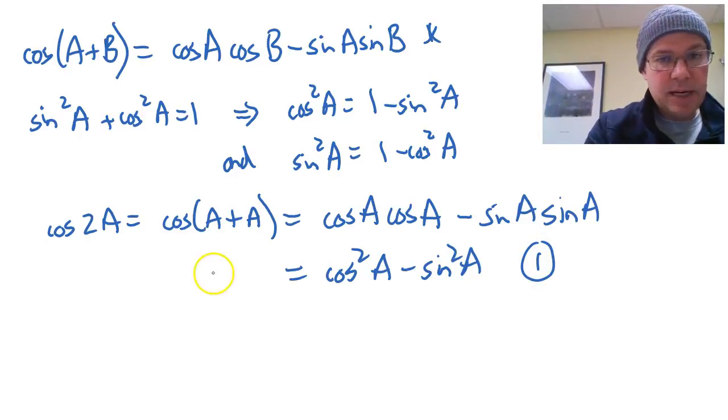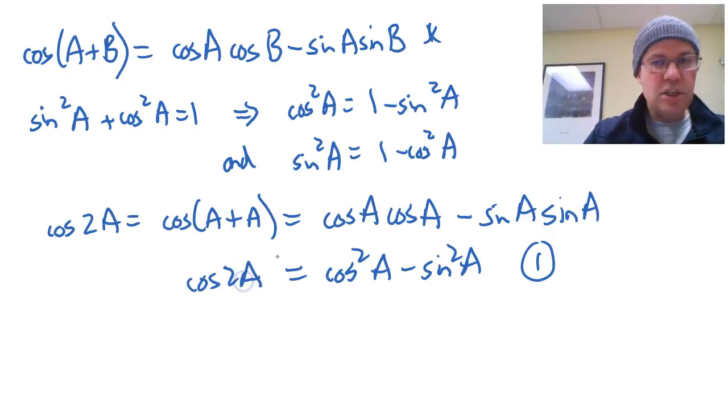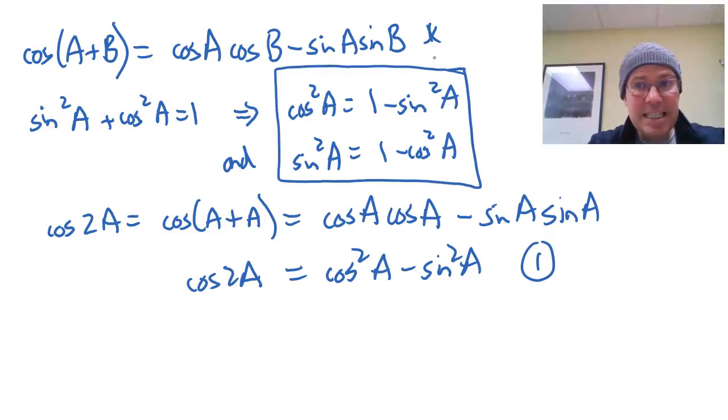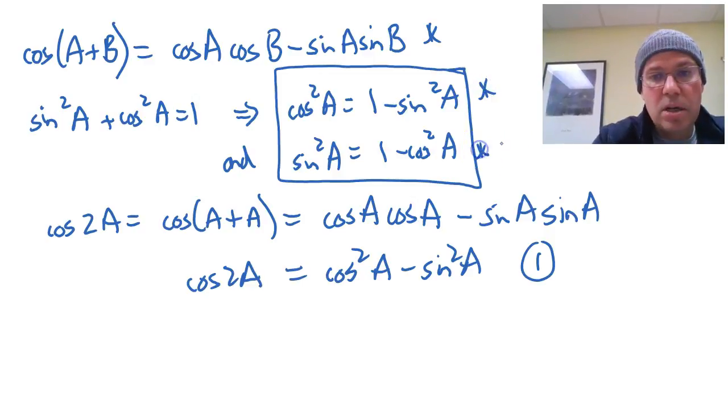Cos squared A minus sin squared A. However, for cos 2A there are actually three formulas and we can get the other two by considering the Pythagorean identities. These come from sin squared A plus cos squared A is one. You just rearrange them to get cos squared is one minus sin squared and sin squared is one minus cos squared.